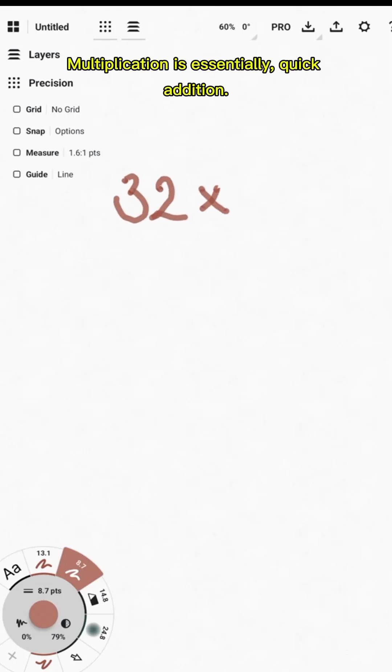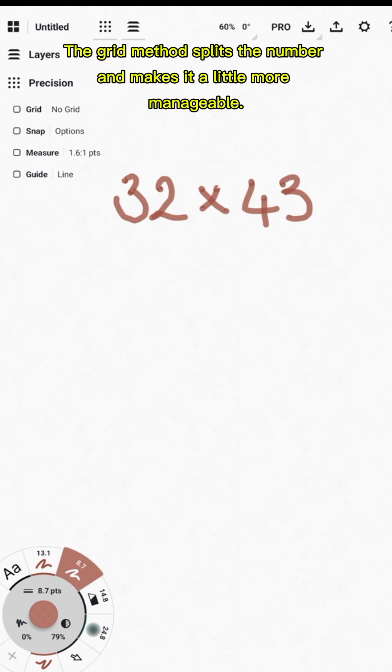Multiplication is essentially quick addition. Some people get lost in the carrying one. The grid method splits the number and makes it a little more manageable.